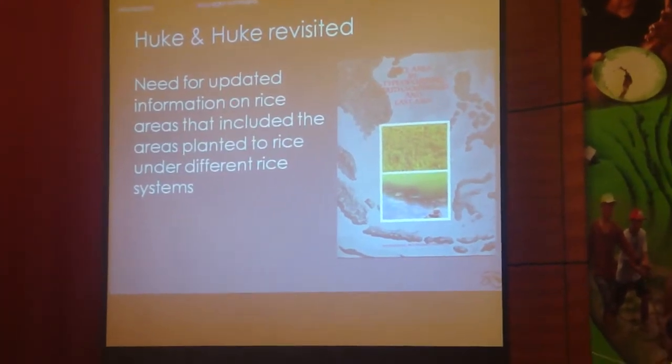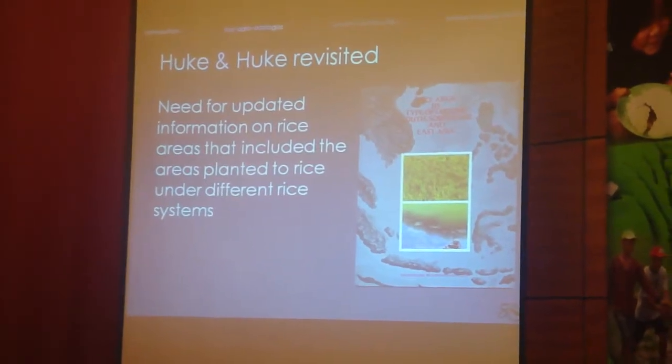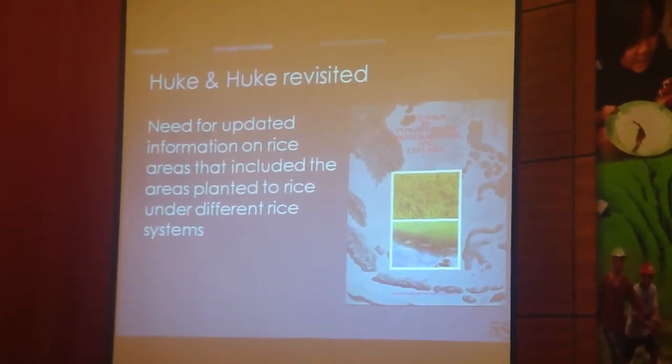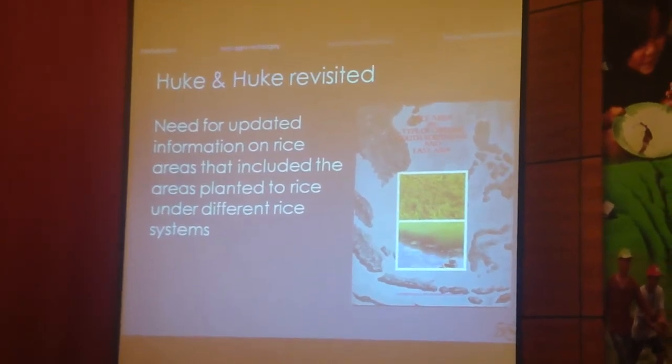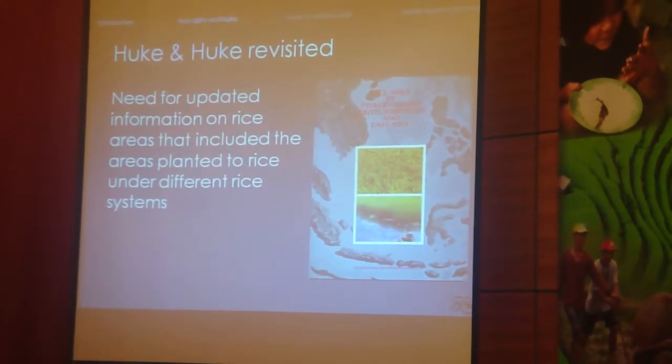The first step, as David alluded to, was this whole concept of agroecologies. We have a tremendous amount of information on this from people like Hugh and Hugh, who have collated statistical information and had a lot of expert roundtables and discussions on how rice is cultivated across Asia. This is something we hoped to update. After several rounds of discussions and several attempts using other methods, we came back to this typology to describe the different rice systems across Asia.